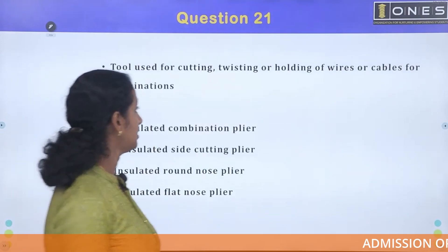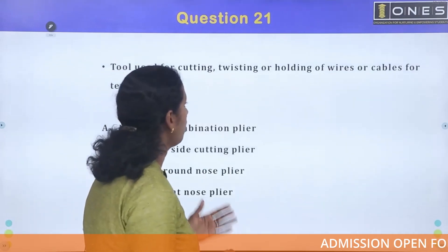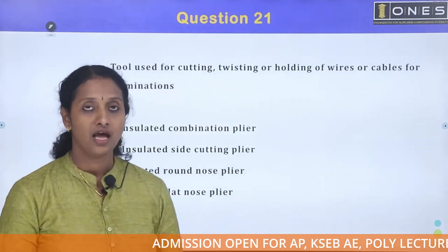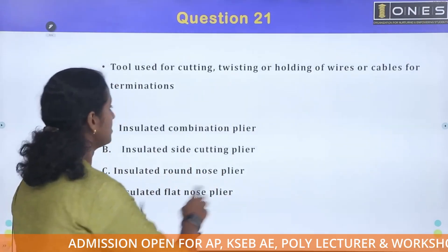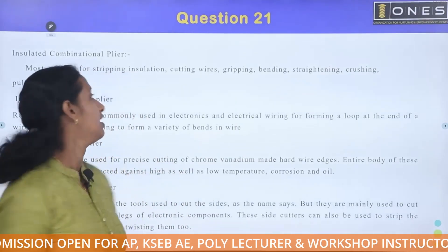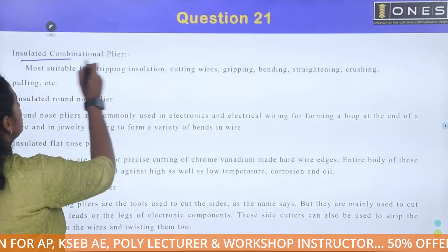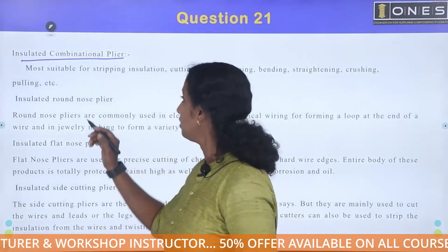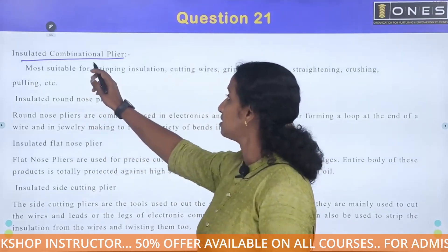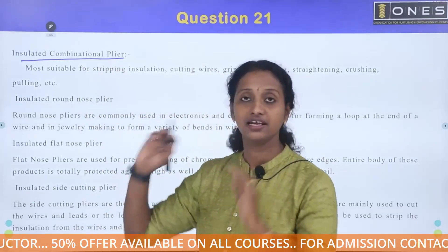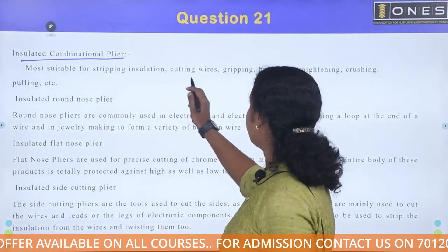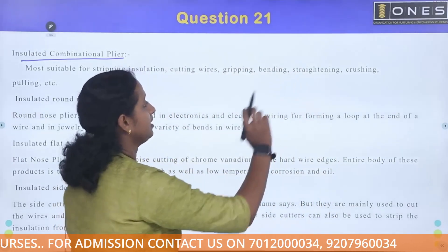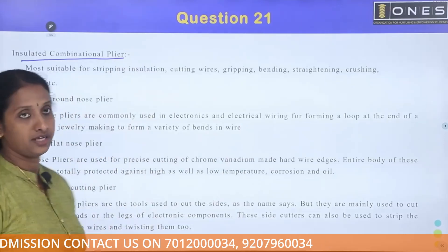Tools used for cutting, twisting, or holding of wires or cables for termination. The insulated combination pliers are used for cutting, gripping, bending, straightening, crushing, and pulling.